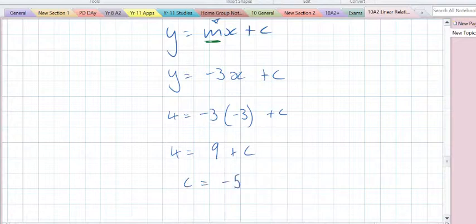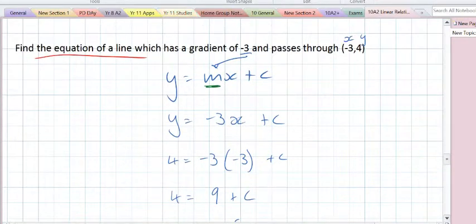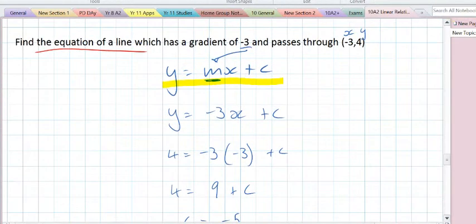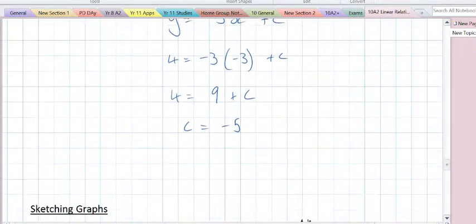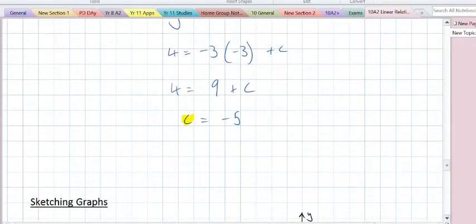So now from our starting equation y equals mx plus c, we found m, it was given, and then we substitute in a point to find c. So our equation of the line is y equals minus 3x minus 5.